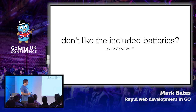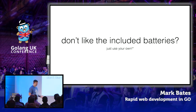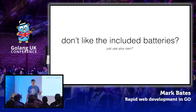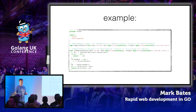If you don't like the included batteries, that's fine — just use your own. There's only one included battery that is absolutely required: the Gorilla Mux router. A lot of these have flags that just turn them off. You don't want Webpack? Turn it off. You don't want Docker? Turn it off. You don't want Plush or templating? Use the API flag and you're just dealing with JSON. You can replace the templating engine by implementing the template engine type — just one function that takes three arguments. You can create your own renderers.